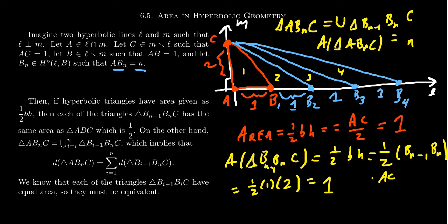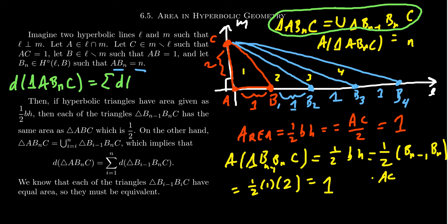But what happens if we look at the defect of this triangle? We've constructed a triangle whose area is going to be N. And we could make this get bigger, bigger, bigger by lengthening the base there. But if we look at the defect, the defect is also an additive function that this decomposition, this dissection, partition of triangles right here also applies to the defect function. And so if we look at the defect of the triangle ABNC, this will equal the sum of the defects of all these little triangles.